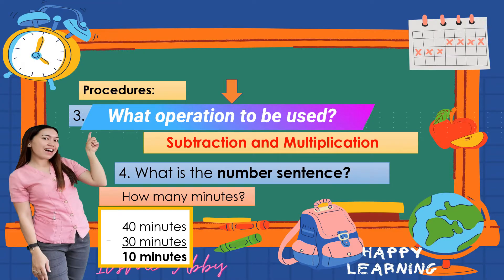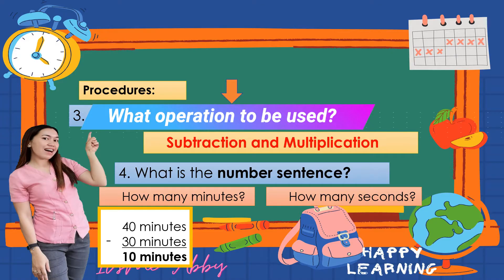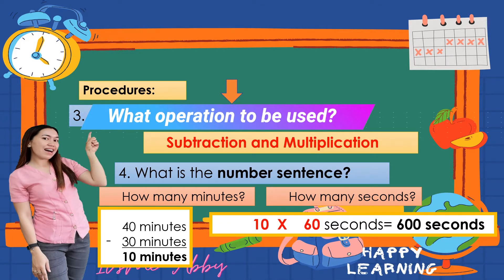40 minutes represents the time of Lena and 30 minutes represents the time of Malou — therefore 10 minutes is how much longer Lena takes to make a cake than Malou. For the seconds: 10 is the number of minutes and 60 is the number of seconds per minute.